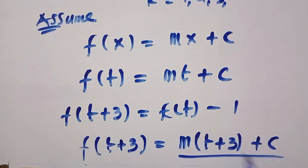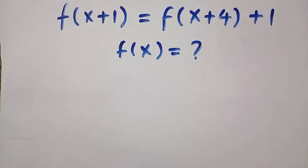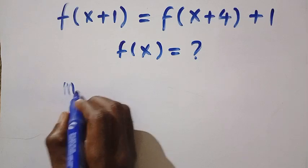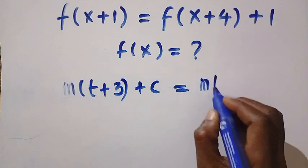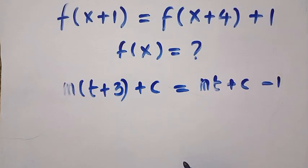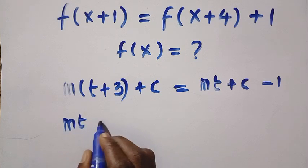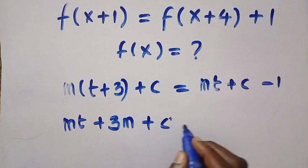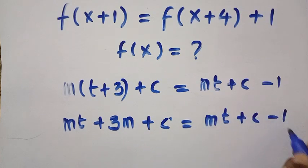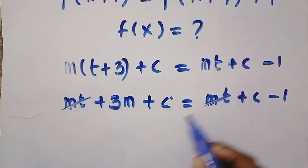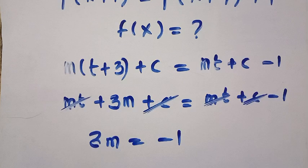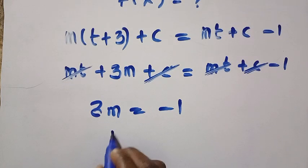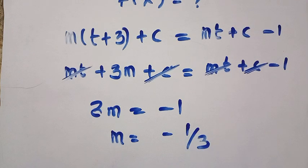We have f of t plus 3 equals m times bracket t plus 3 plus c, and f of t minus 1 equals mt plus c minus 1. Opening the parentheses, we get mt plus 3m plus c equals mt plus c minus 1. When mt cancels with mt and c cancels with c, we have 3m equals minus 1. Dividing both sides by 3, we get m equals minus 1 over 3.